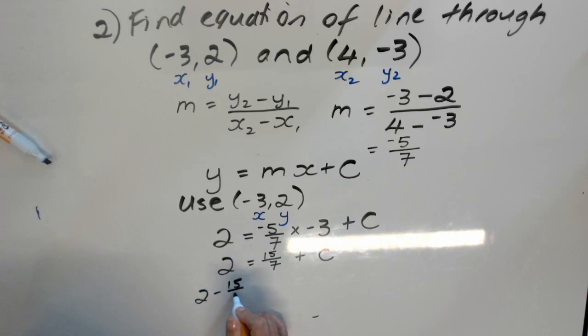2 minus 15 over 7 equals c. So, you can use your calculator to find, or you can rename this as 14 over 7. You will find that your c is negative 1 seventh.